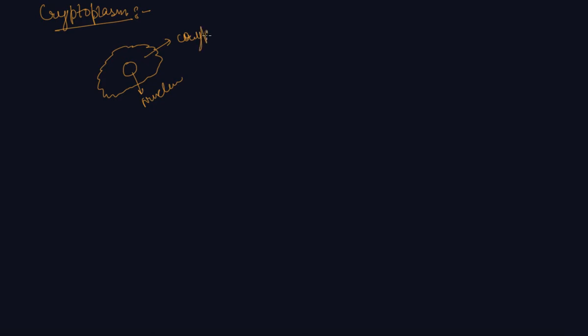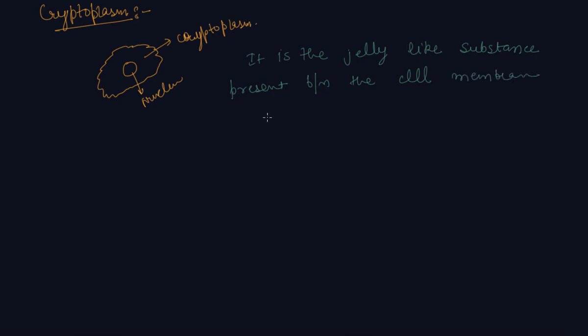What is cytoplasm? Cytoplasm is the jelly-like substance present in a cell between the cell membrane and the nucleus. This region between the nucleus and the cell membrane is called cytoplasm.